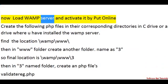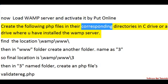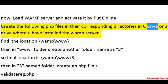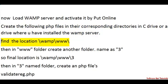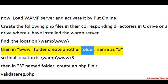Now load the WAMP server and activate it by putting it online. Create the following PHP files in their corresponding directories in the C drive or whichever drive you have installed the WAMP server. Find the location: \wamp\www\, then in the www folder create another folder.